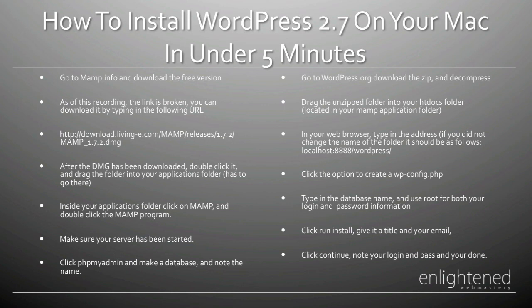Next you need to click the option to create a wp-config.php file. Type in the database name you created earlier and use root for both your login and password information, all lowercase. Click run install, give it a title, give it your email. Then click continue and note the login and password when you're done.